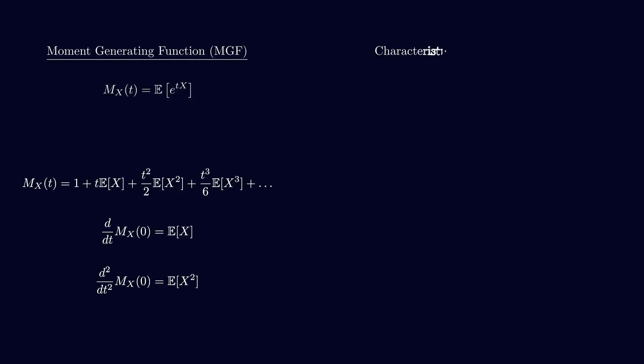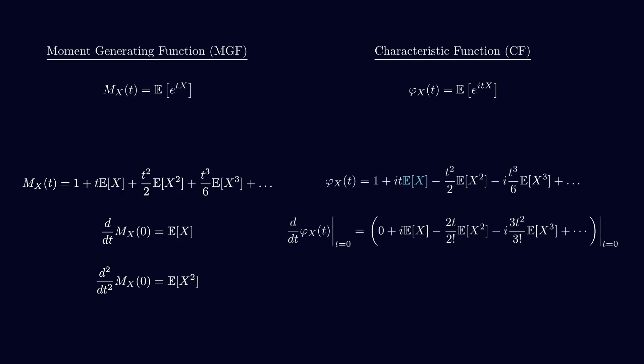Now, let's move on to the characteristic function. The characteristic function, or CF, is another tool that helps us understand the distribution of a random variable. Unlike the MGF, which uses the exponential function of tx, the characteristic function uses the complex exponential of itx. The addition of the complex term i is crucial because, unlike the MGF, which may not exist for all values of t, the characteristic function always exists for any random variable. Also, we won't dive into all the details of it, but note that the characteristic function is closely related to the Fourier transform.